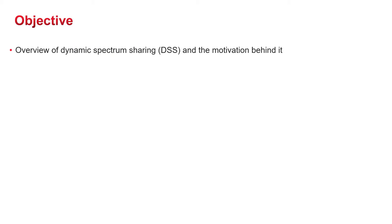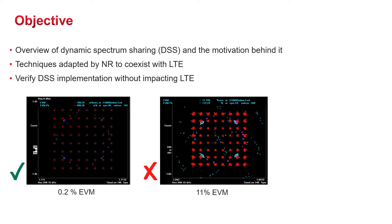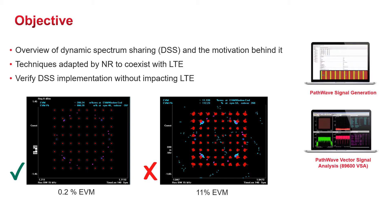Today, we'll review what dynamic spectrum sharing is and the motivation behind it, look at the techniques adapted by 5G NR in order to coexist with LTE, and finally, we'll see a demo of verifying a DSS implementation without impacting the LTE performance. I'll be using Keysight's PathWave signal generation and analysis software to illustrate the concept and show a demo. Trial licenses are available so you can explore what I'm covering in more detail.